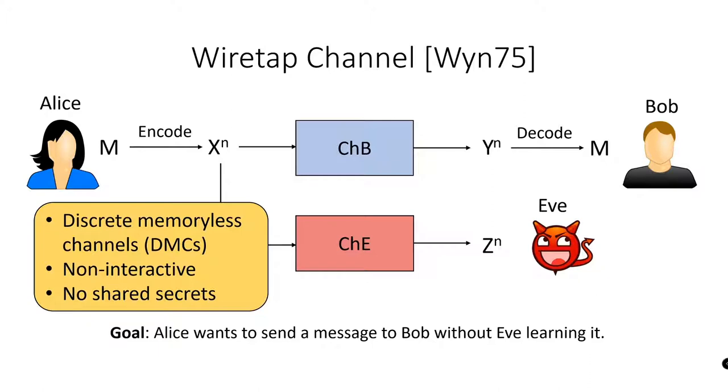In this work, we consider the case where channel B and channel E are both discrete memoryless channels. By this, we mean that each channel can be viewed as a function which maps each input symbol to each output symbol with some fixed probability determined by the channel. Inputs sent into the channel are independently mapped to output symbols based on these probabilities. We are also in the non-interactive setting, meaning that Bob cannot send messages back to Alice, and we assume that Alice and Bob have no prepared shared secrets ahead of time.